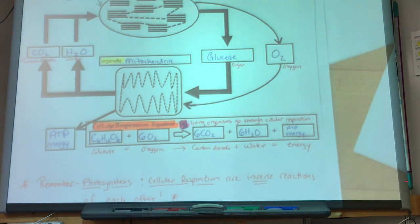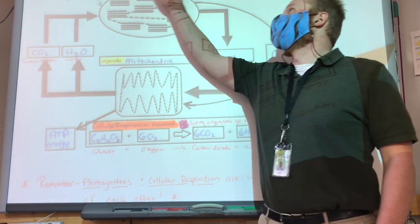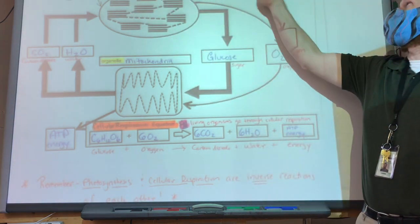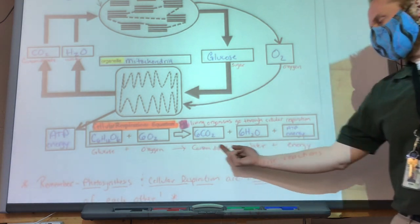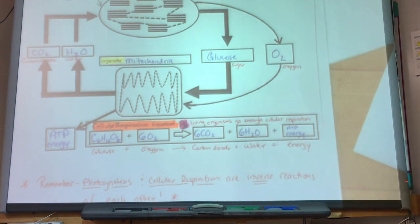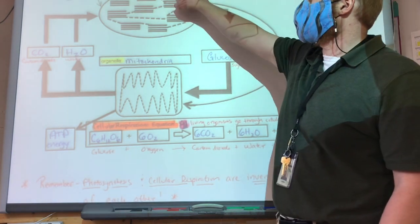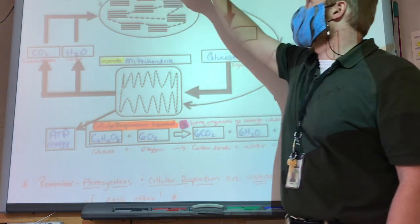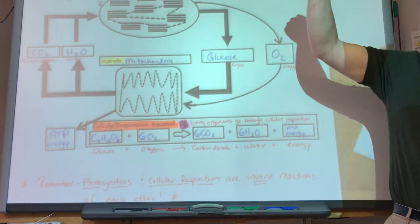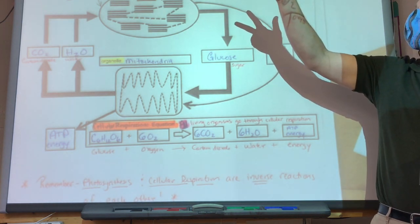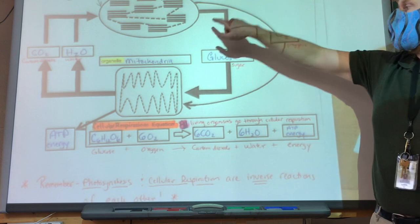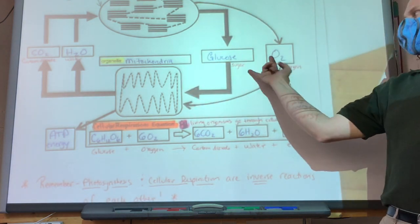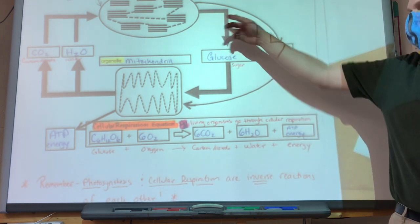I expect you to label what goes in and what comes out of each process. Photosynthesis occurs in the chloroplast: six CO2, six water molecules, and light energy go in. What comes out? Glucose — C6H12O6 — and six oxygen molecules, 6O2. These arrows are reversible — glucose and oxygen come out of photosynthesis and go into cellular respiration.